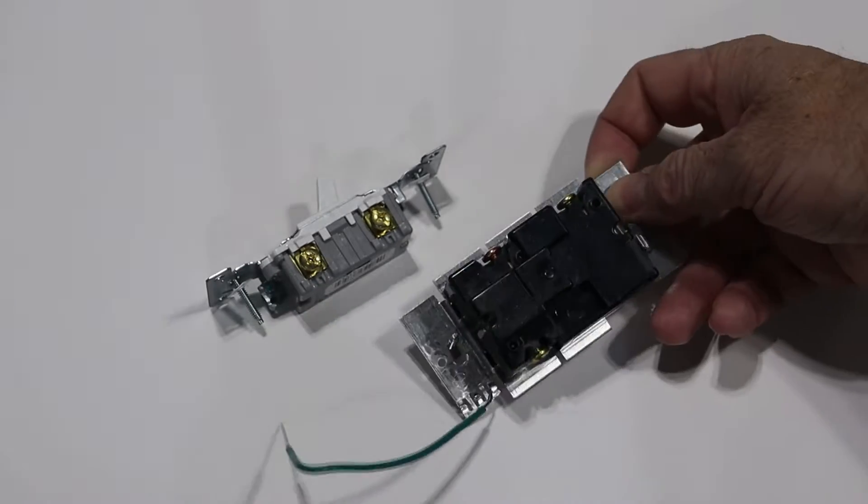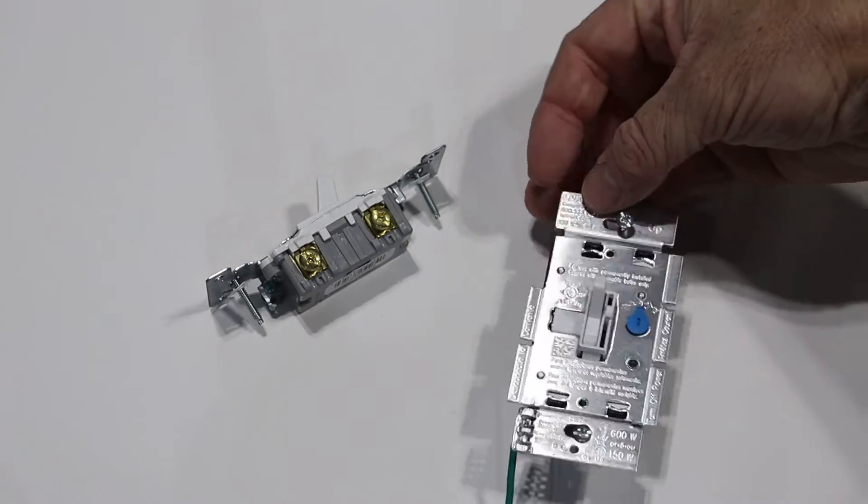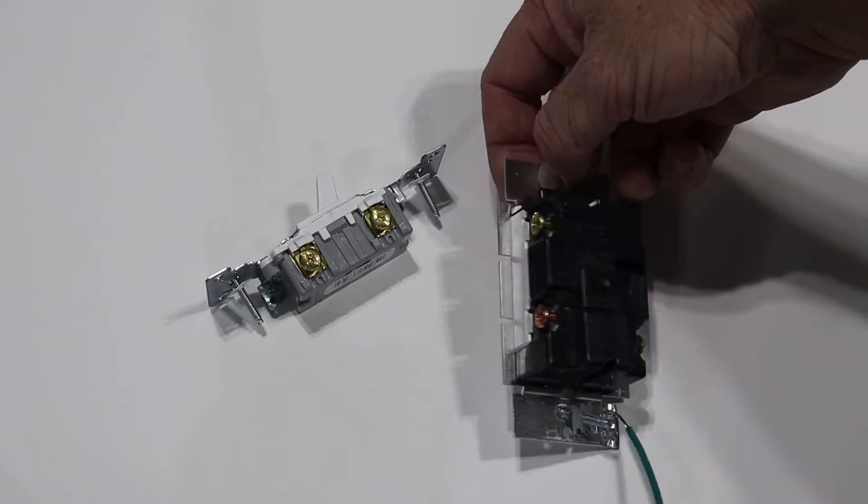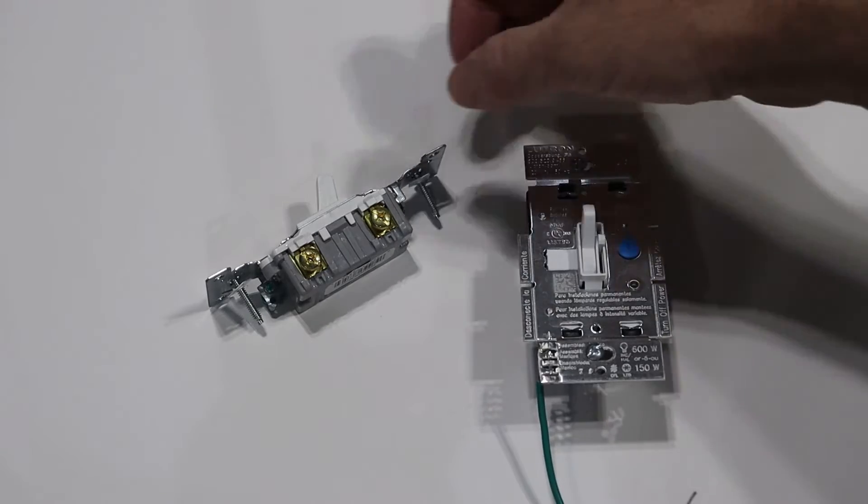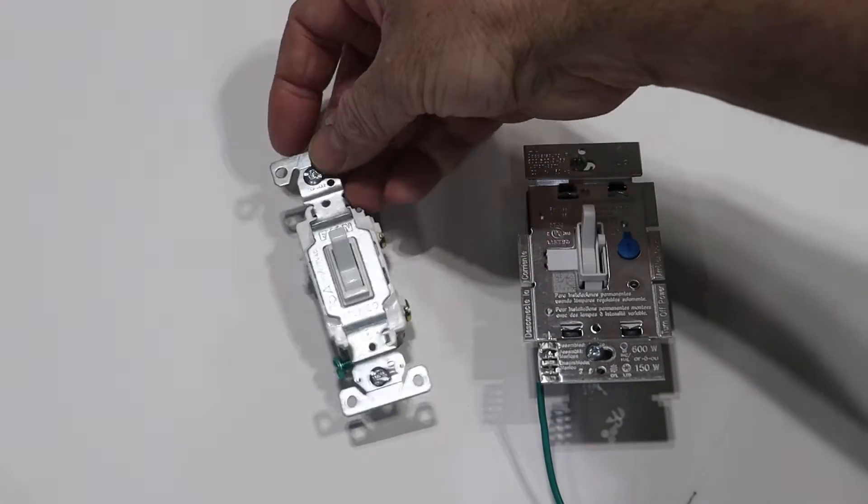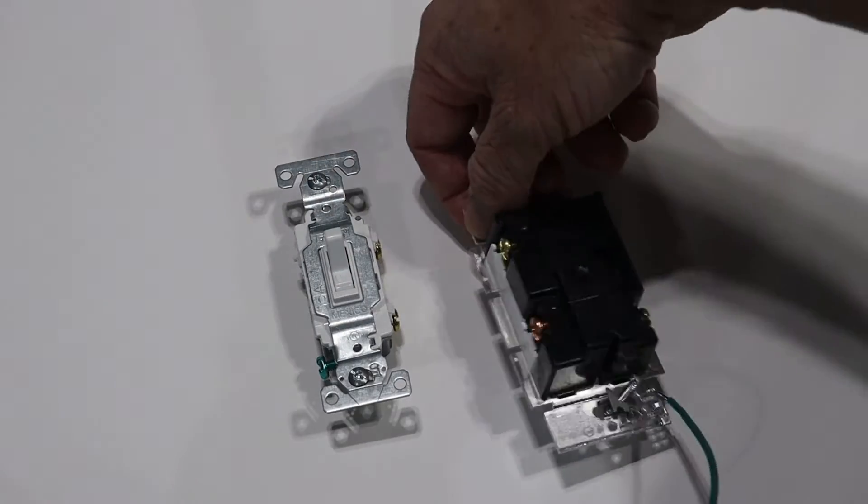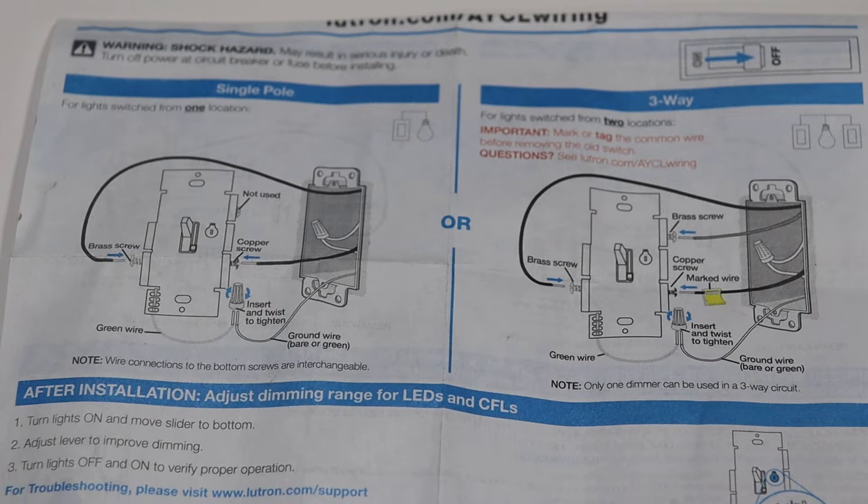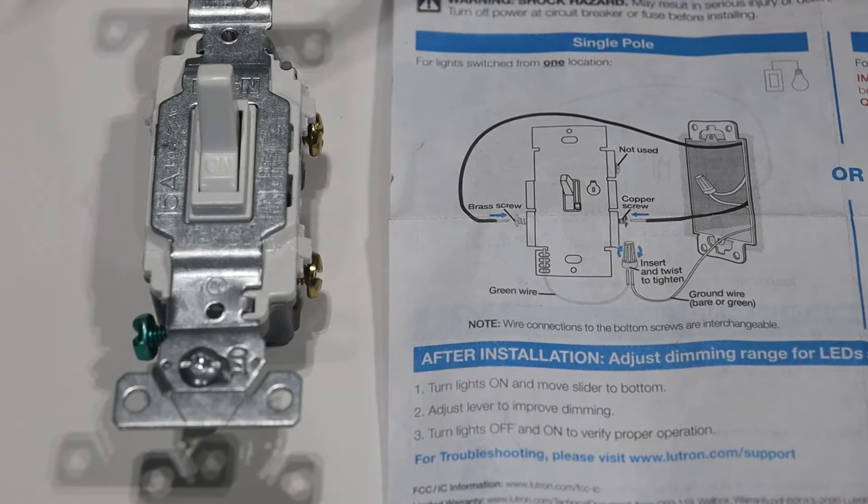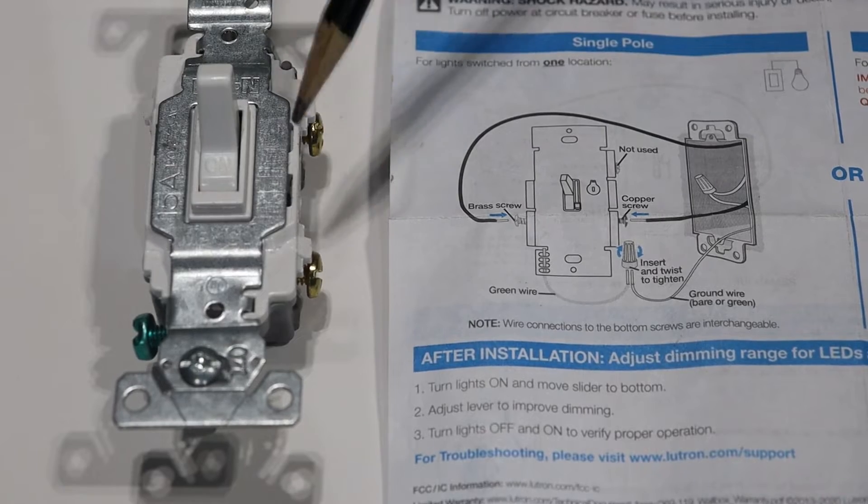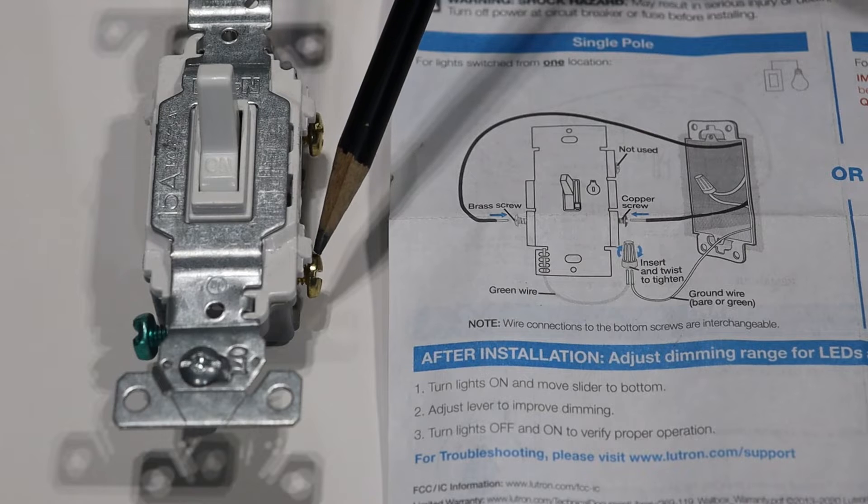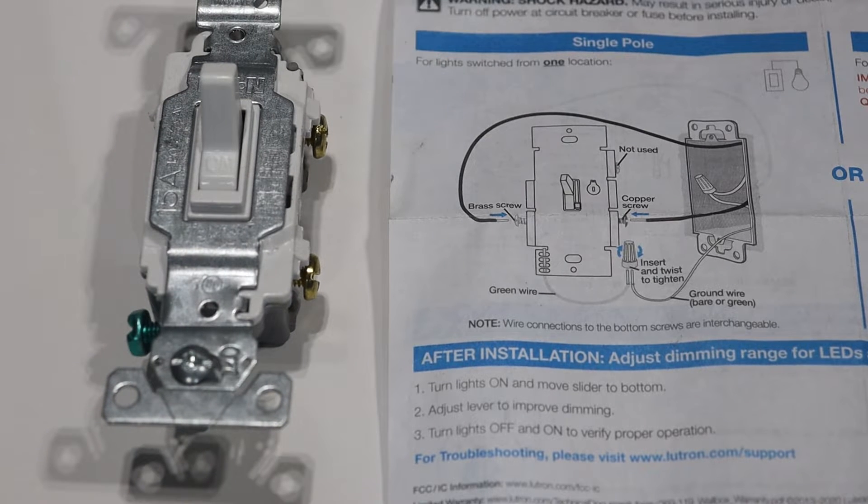Now of course this is where the more technical part comes in. You'll see on this dimmer switch that I have it has three screws and the reason this dimmer switch has three screws is because it can be used to replace a single pole switch where you just have the two screws or it can be used to replace a three-way switch. Your dimmer switch should come with instructions and you definitely want to pay attention to what's going on here.